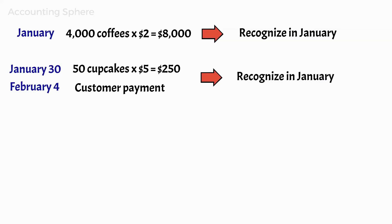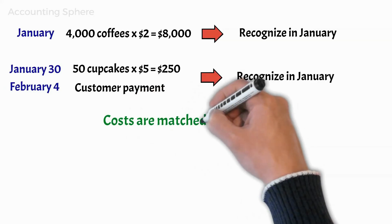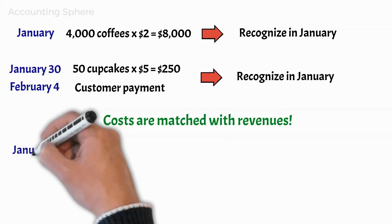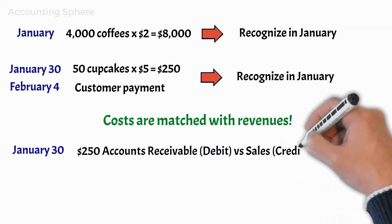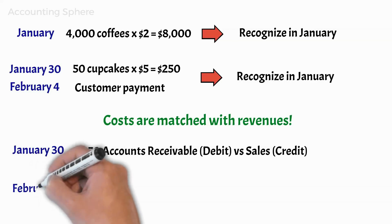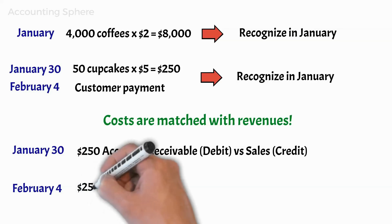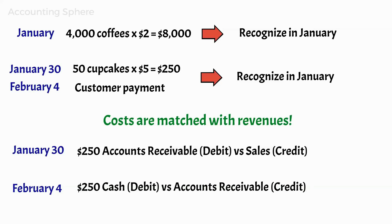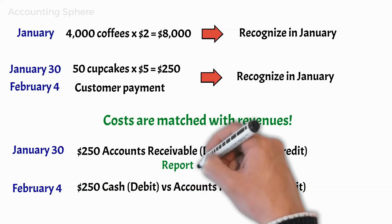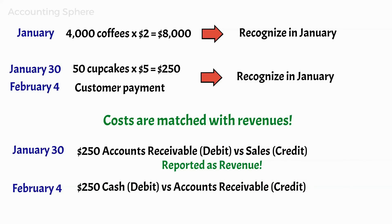The income statement for January will demonstrate how profitable the company was in delivering the cupcakes in January, as that is when costs are matched with these revenues. In January, Michael made an entry to accounts receivable and sales of $250. On February 4, Coffee & Go Sweet receives $250 as payment from his client. These $250 in receipts will not be considered February revenue because it was previously reported as revenue in January when it was earned. In February, Michael will do an entry to report the revenues as a decrease in accounts receivable and an increase in cash.